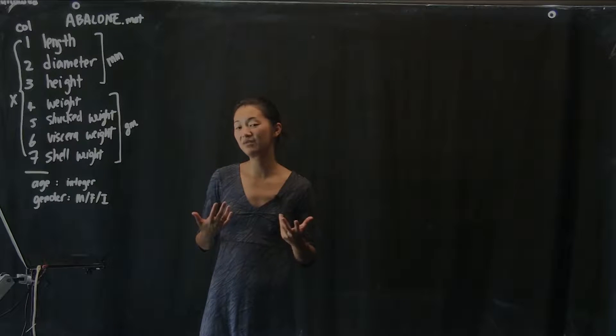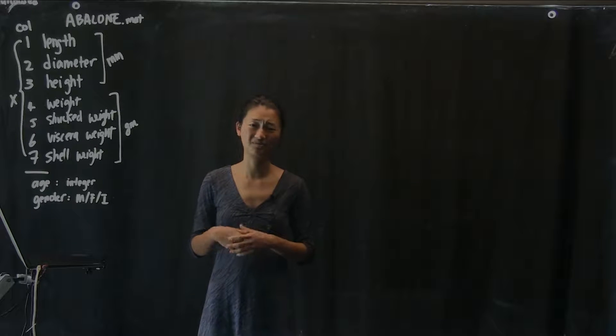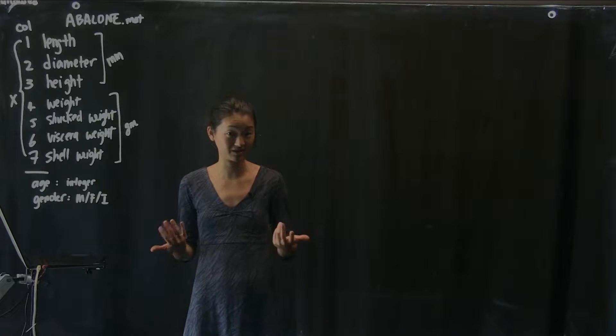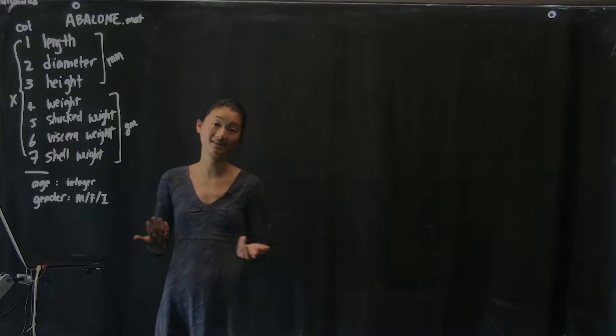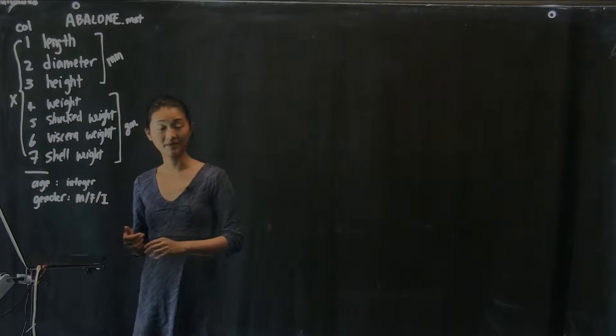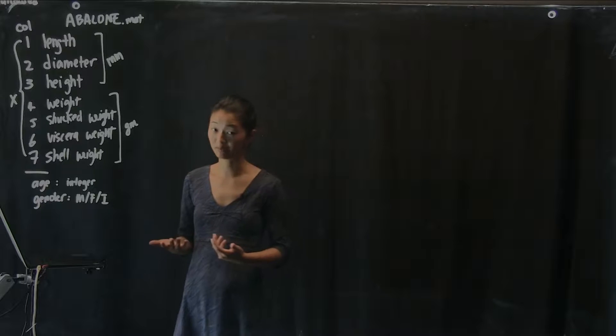Perhaps one thing we'd like to do is, well, how many males, females, and infantile samples are there? Are there roughly equal numbers, or are there a lot more of one type than the other? This is a very sensible question we might be asking if this is just a data set we're handed. We're going to learn how to get that information in a nice way quickly, as well as plot it in the bar graph.